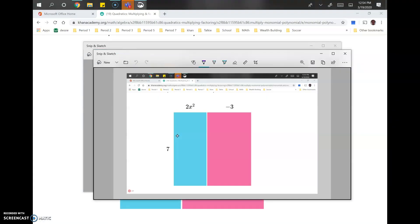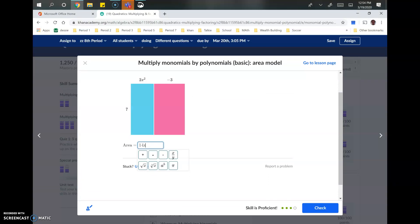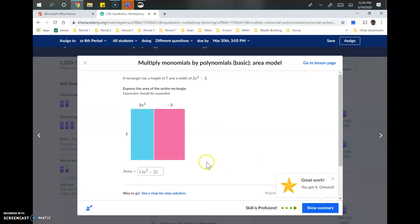2 times 7 is 14. Times X squared is 14X squared. And then 7 times negative 3, negative 21. So we've got 14X squared minus 21. And that's how you multiply using the area model. Good luck.